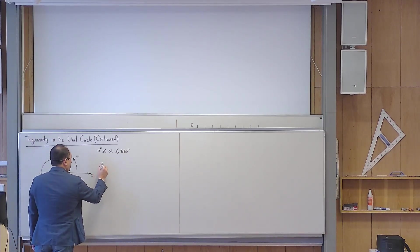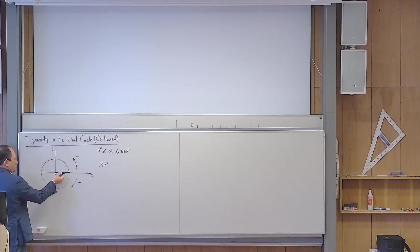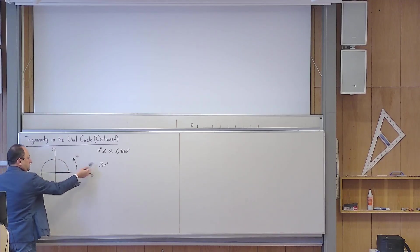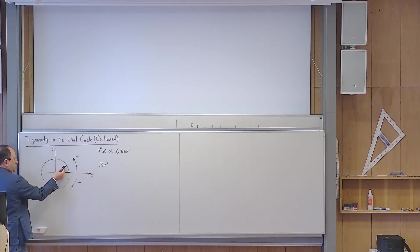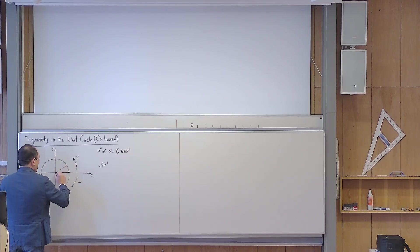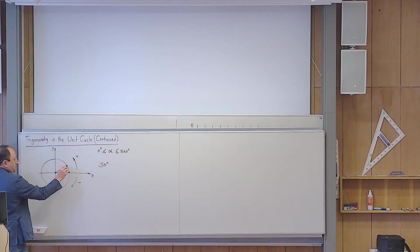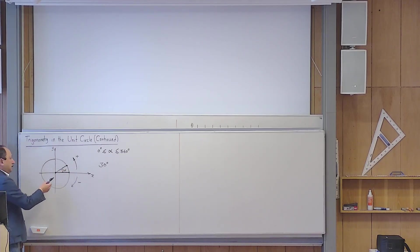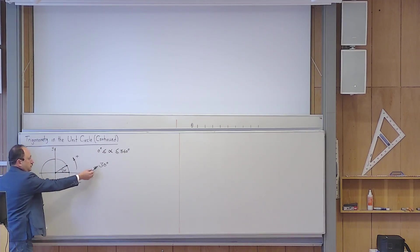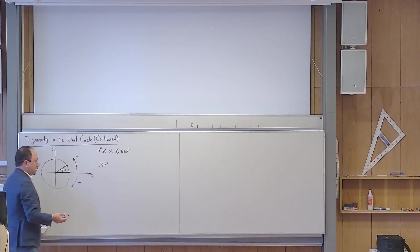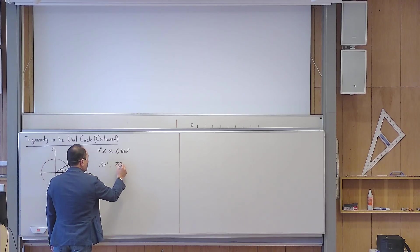For example, we talked about 30 degrees. What does this mean? It means that you start from here and begin rotating about the origin 30 degrees in the positive direction. You start from here, rotate up to a certain point, and stop. This is considered to be positive 30 degrees. Every angle has an end point on the unit circle, which is important. Can you give me any other angle different from 30 degrees that ends up at the same point? For example, 390 degrees.